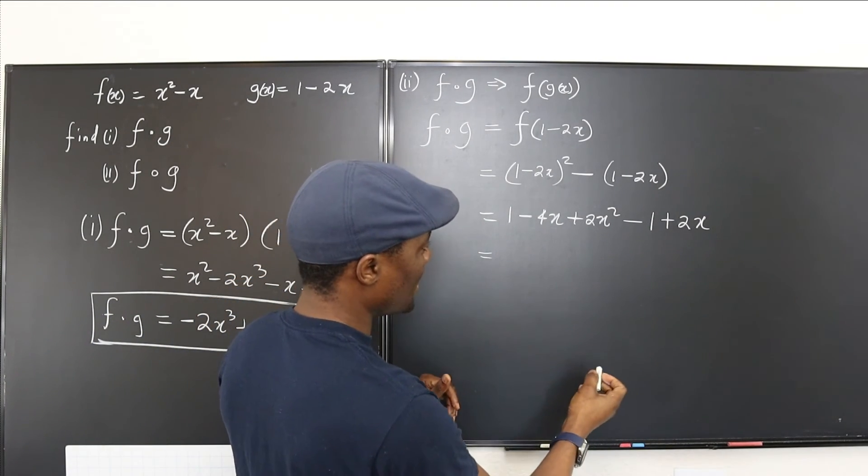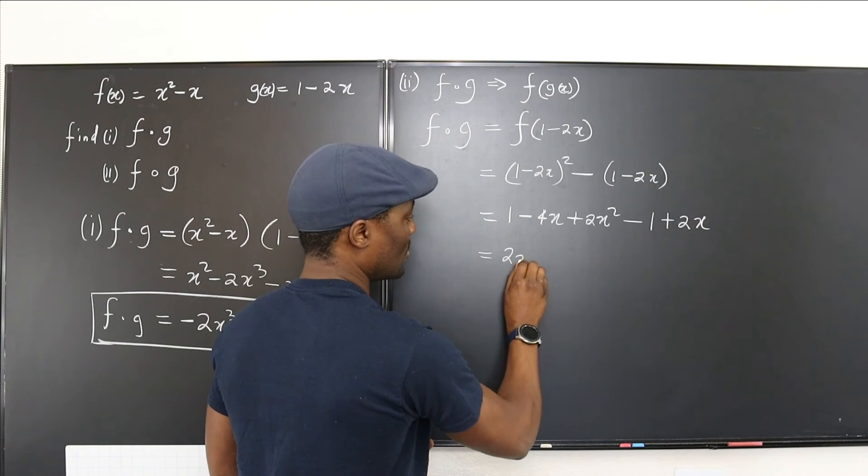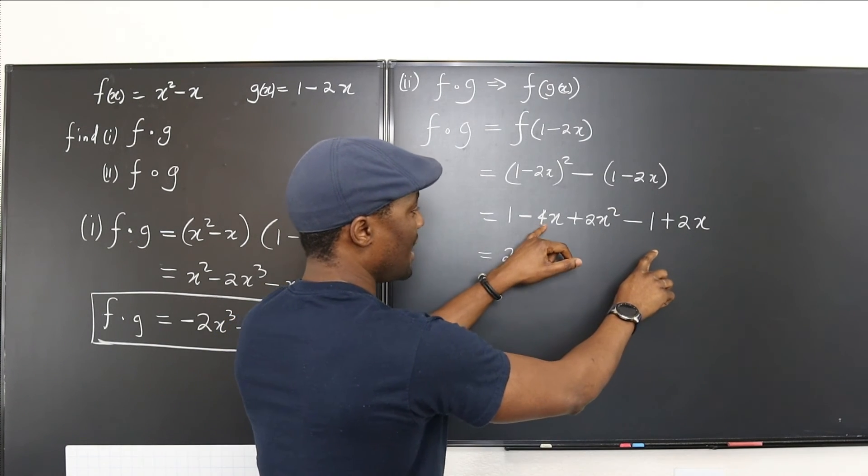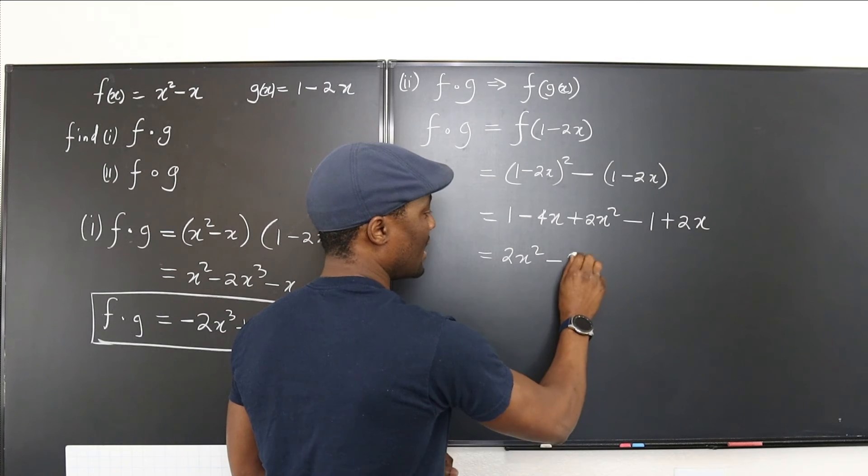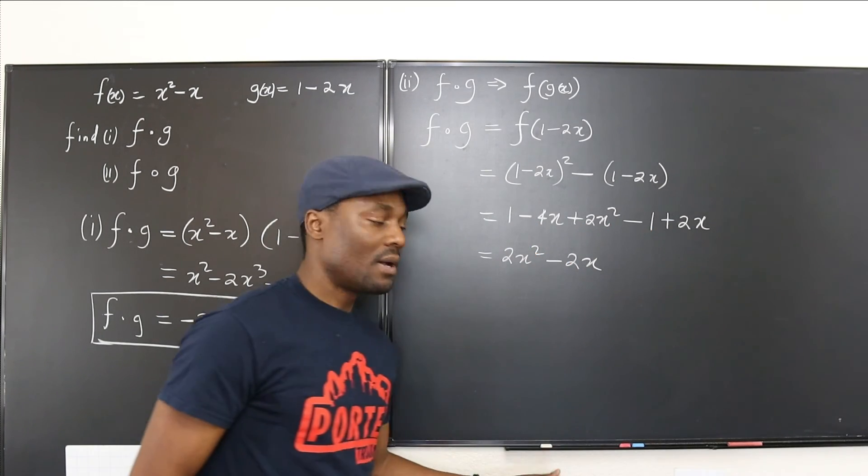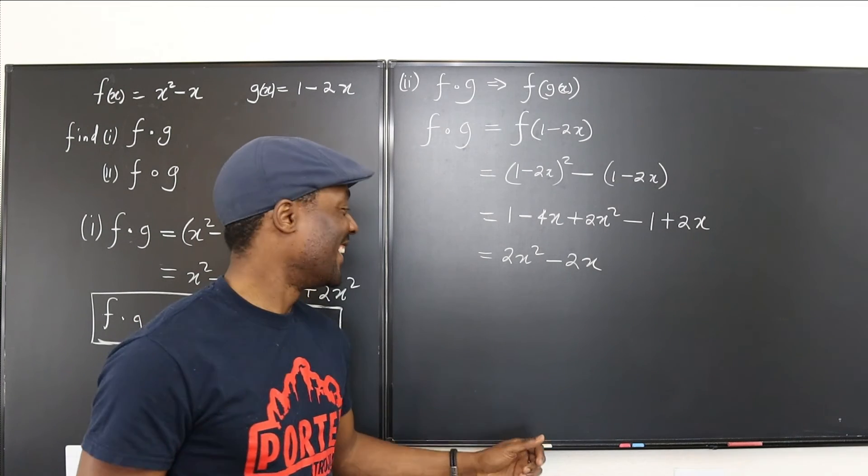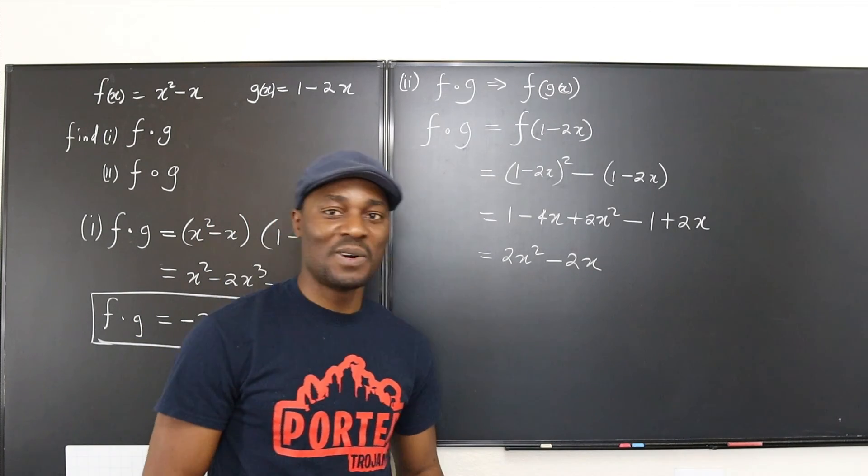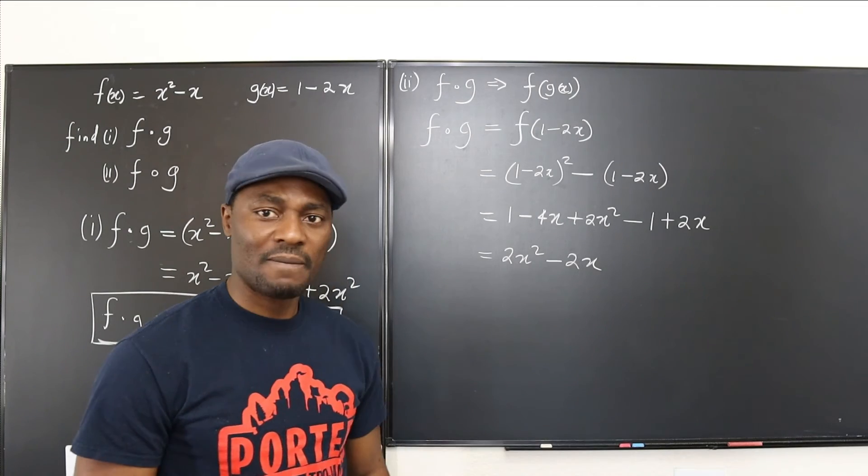What can we put together? We can write 2x squared. Then you have negative 4x plus 2x gives you negative 2x. Then you have 1 minus 1. Well, cancels out. This was trying to cancel me out. It ain't going to work. And that's it.